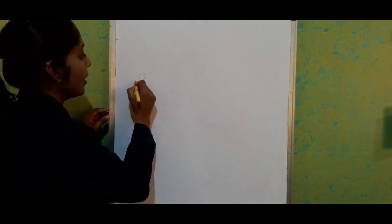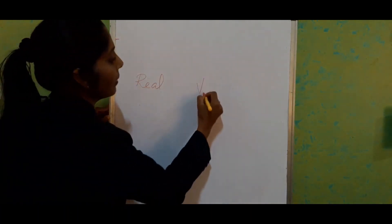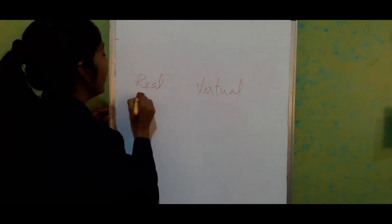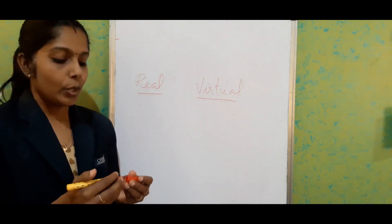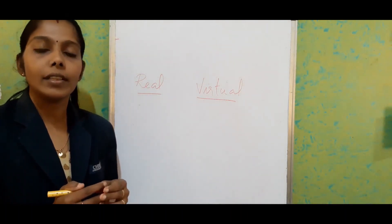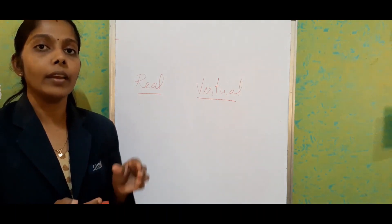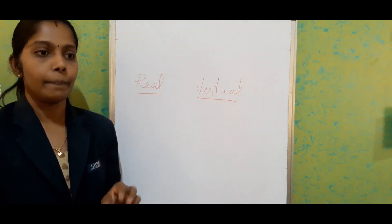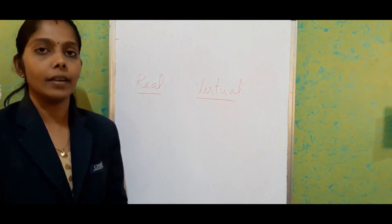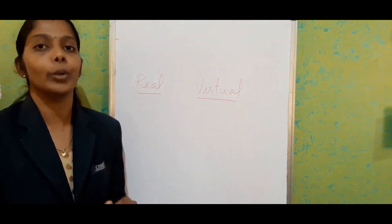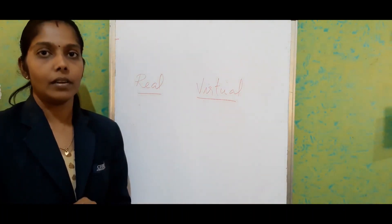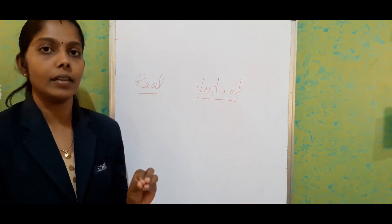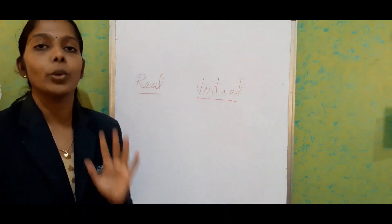We studied real image and virtual image in 7th standard and even in 8th standard. For a real image, after the reflection, the light rays come and meet at a particular point. And if we keep a screen on that particular point, we will get the image on the screen. So we have the intersection of reflected rays meeting at a point, and we can get the image on the screen.